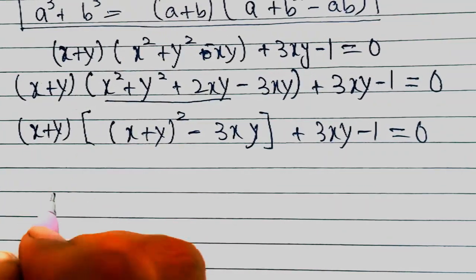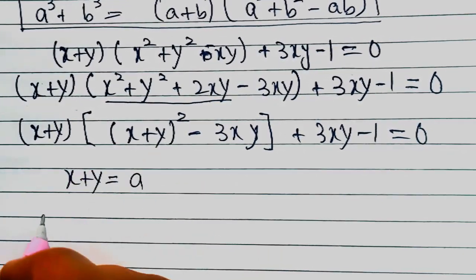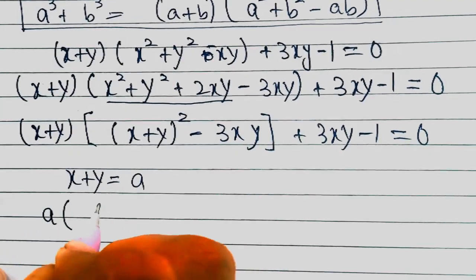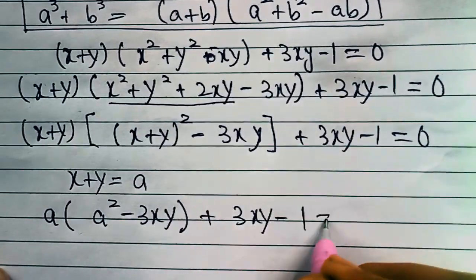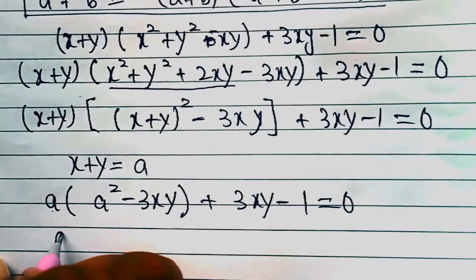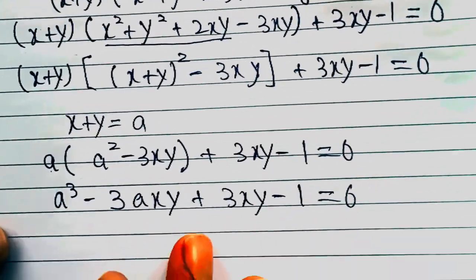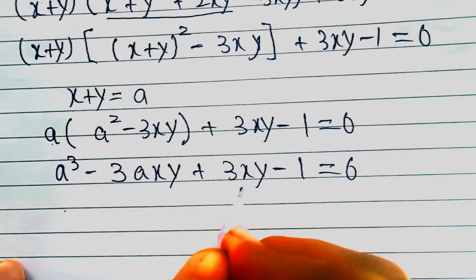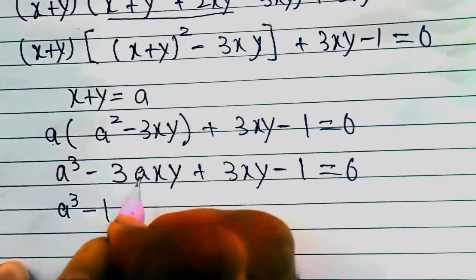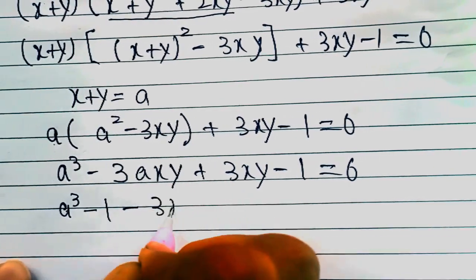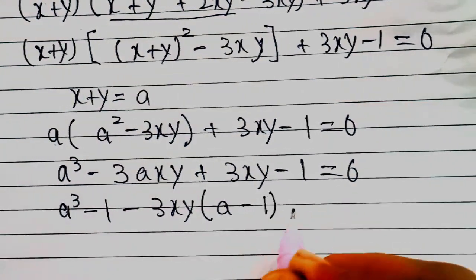Let x + y = a. Then this becomes a(a² - 3xy) + 3xy - 1 = 0, which rearranges to a³ - 1 - 3xy(a - 1) = 0.